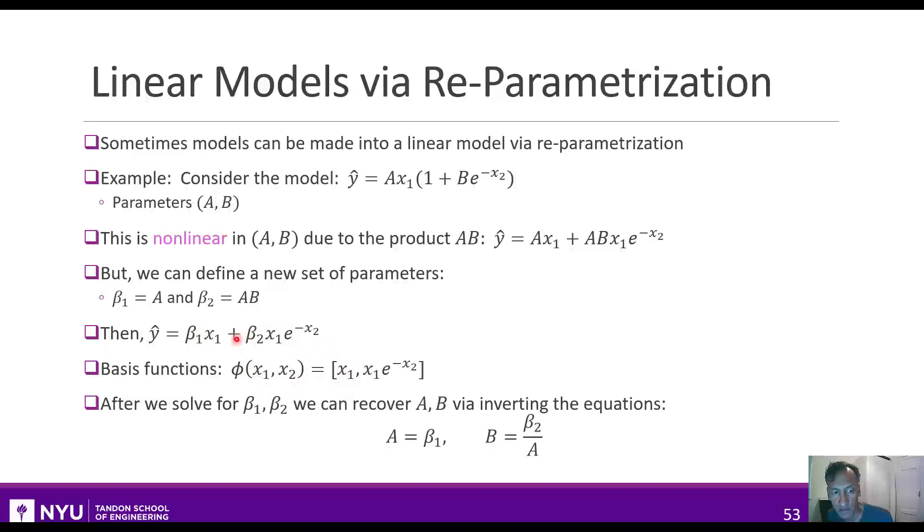After you have beta1 and beta2, if you want to go back and solve for a, you can just invert these equations. So you can say if a is beta1, and then b is just beta2 over a.